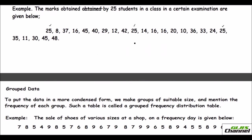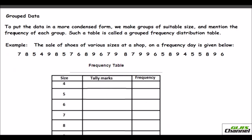With 25 values, it is really hard when the number of students is more — you will have too many numbers and they don't make any meaning. No layman would understand what it is. So what we normally do in statistics is make it in a condensed, presentable form. You may prepare a tally mark or frequency table and put the data in a table so that anyone with minimum statistical knowledge can understand. To put the data in a more condensed form, we make groups of suitable size and mention the frequency of each group. Such a table is called a grouped frequency distribution table.